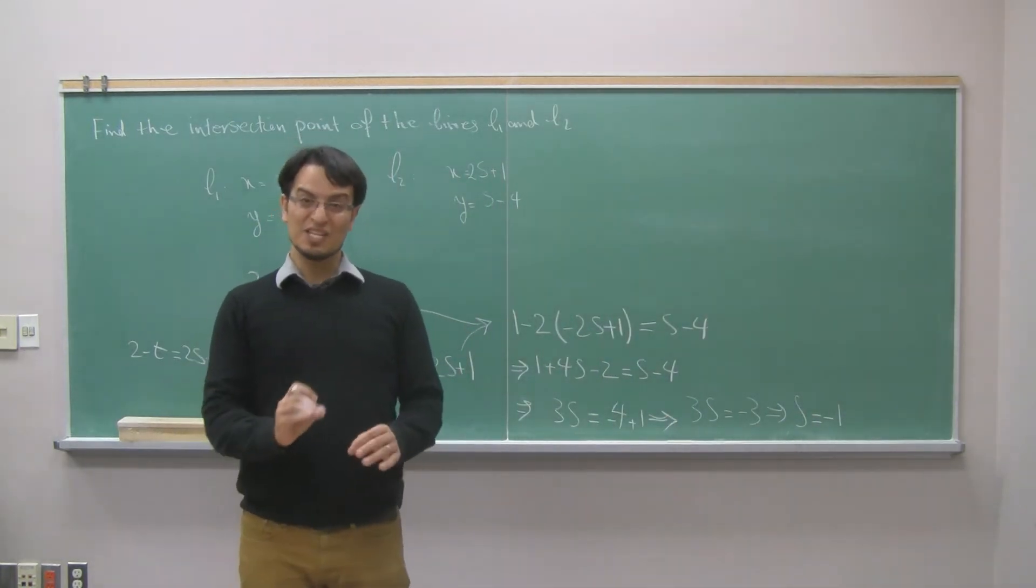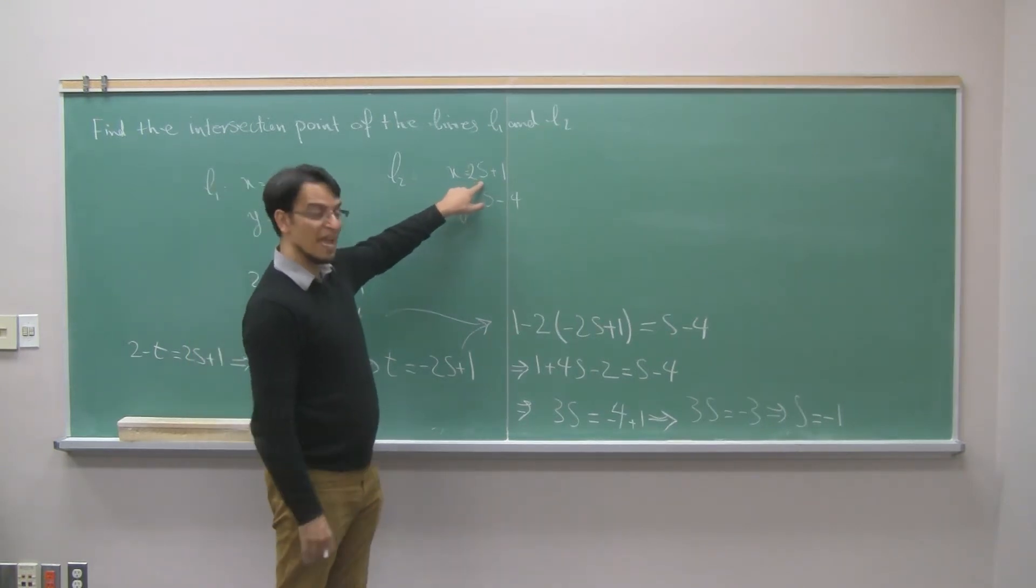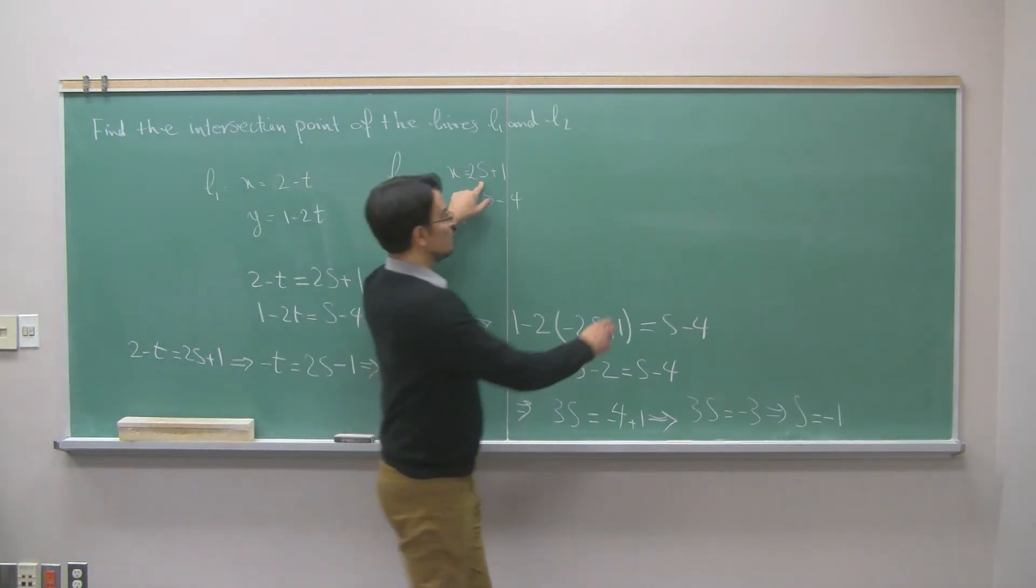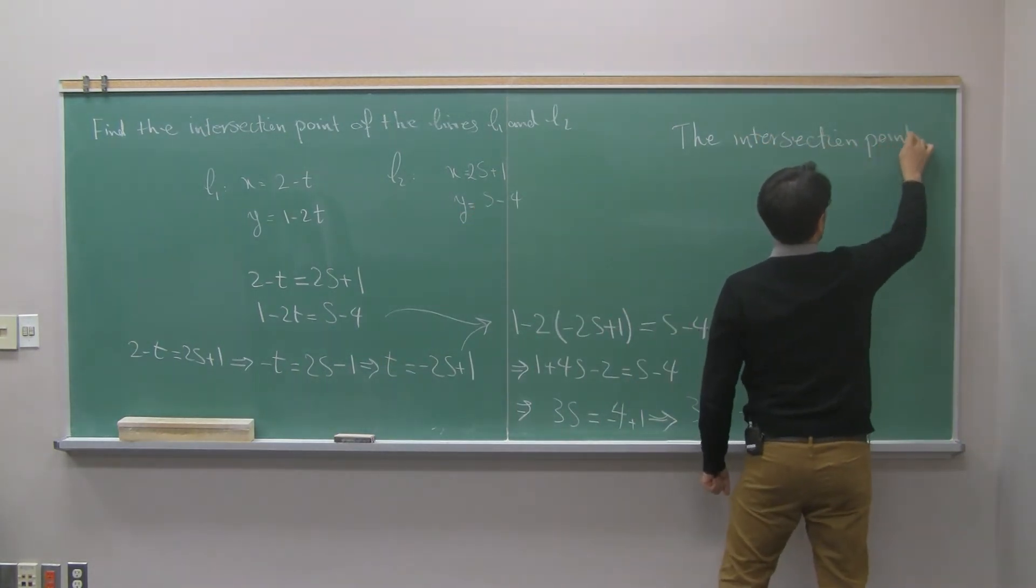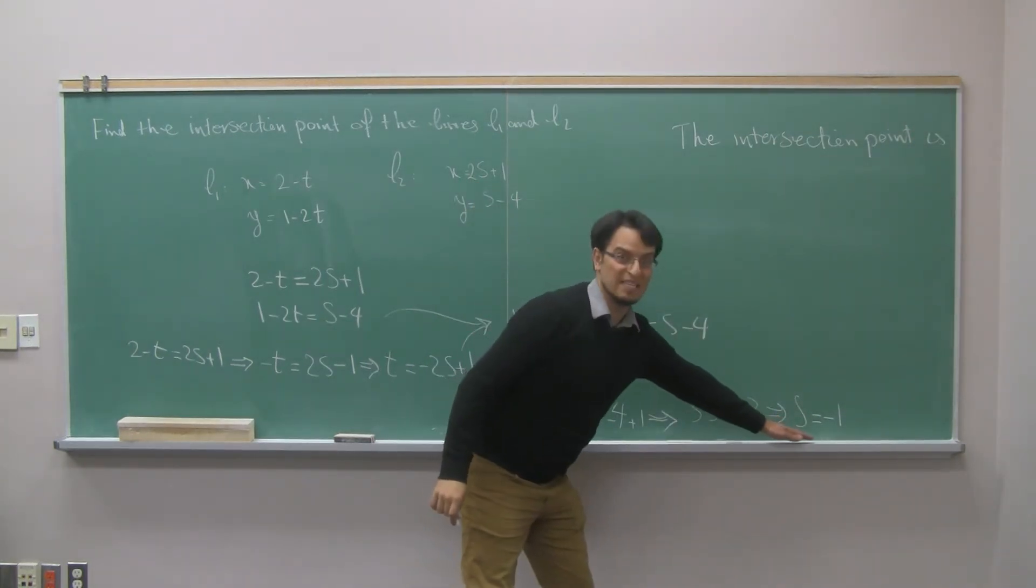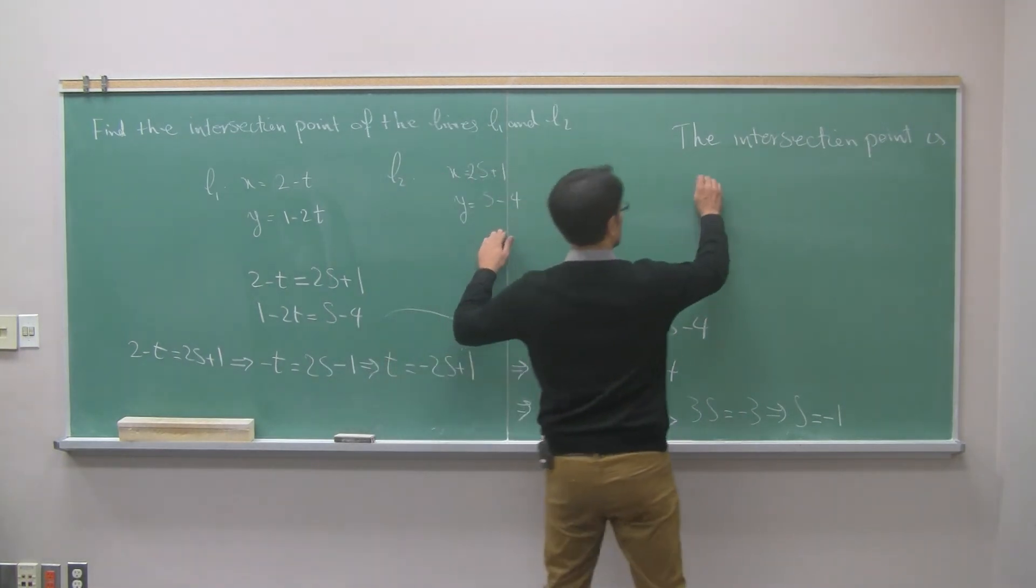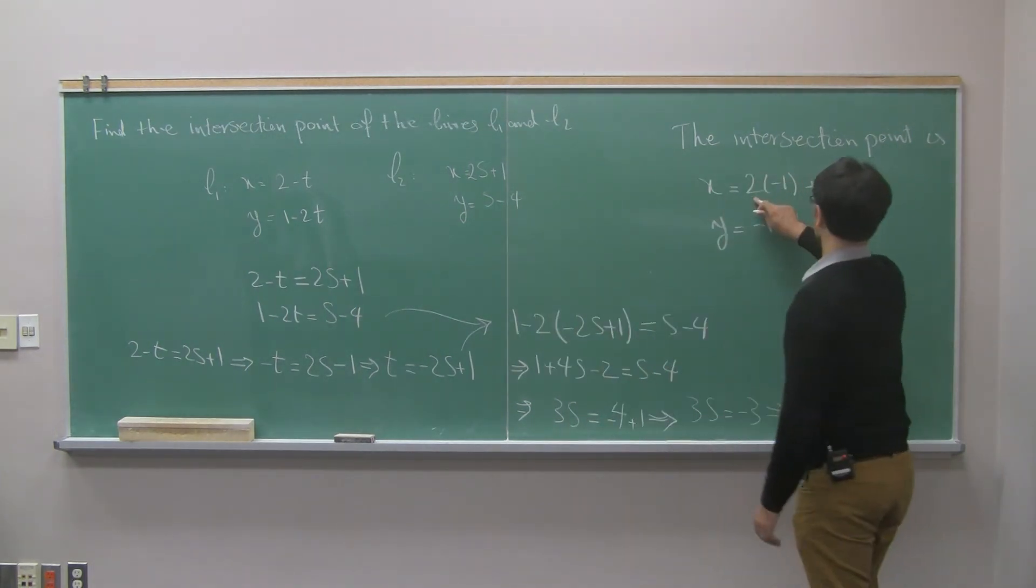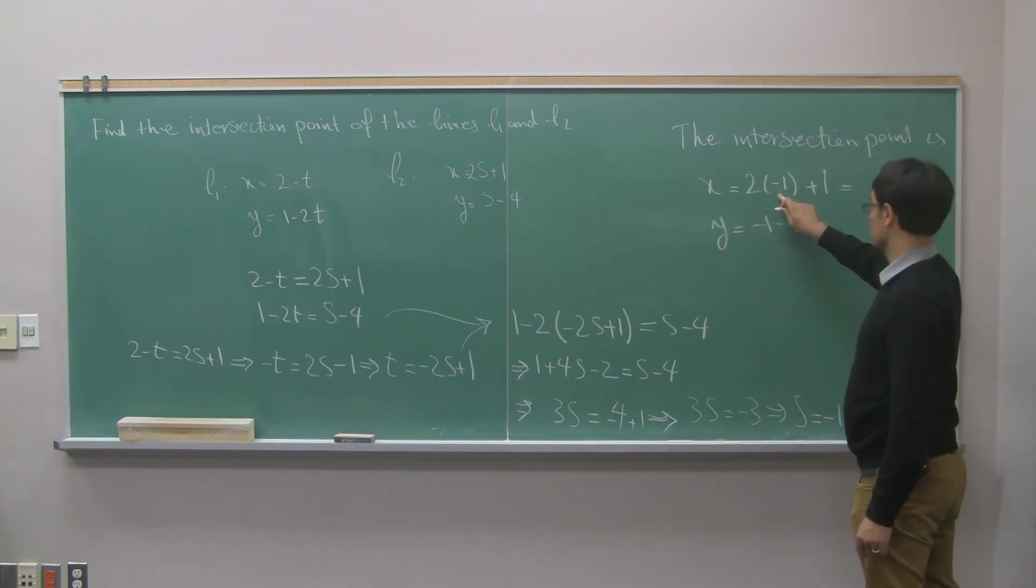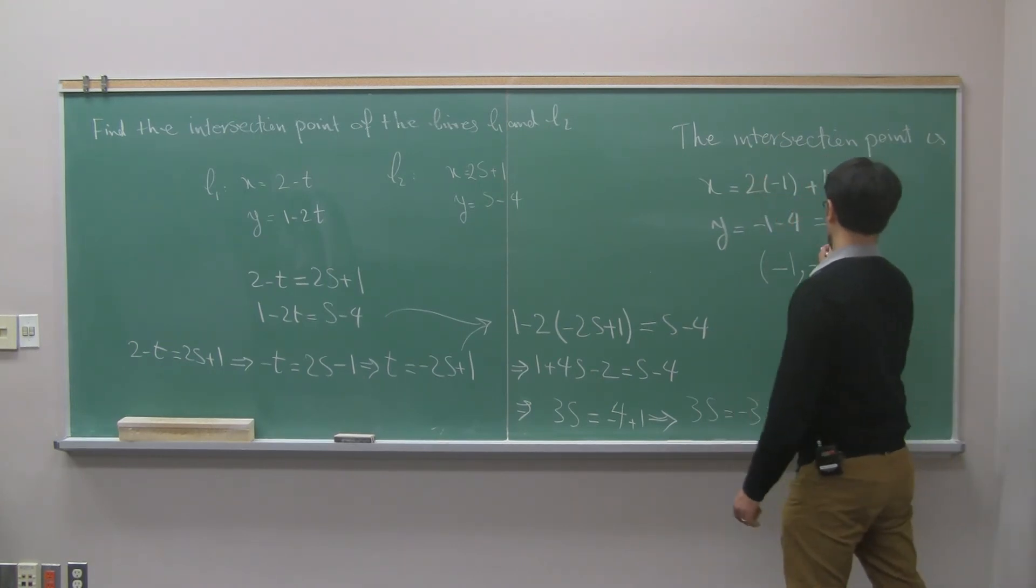What does it mean? It means the intersection point, using this parametric equation, has the parameter s equal to negative 1. So I found s is negative 1. Plug in s into the parametric equation in terms of s, and it will give you the intersection point. 2 times negative 1 is negative 2, plus 1 is negative 1. Negative 1 minus 4 is negative 5. So the intersection point has first component equal to negative 1 and second component negative 5.